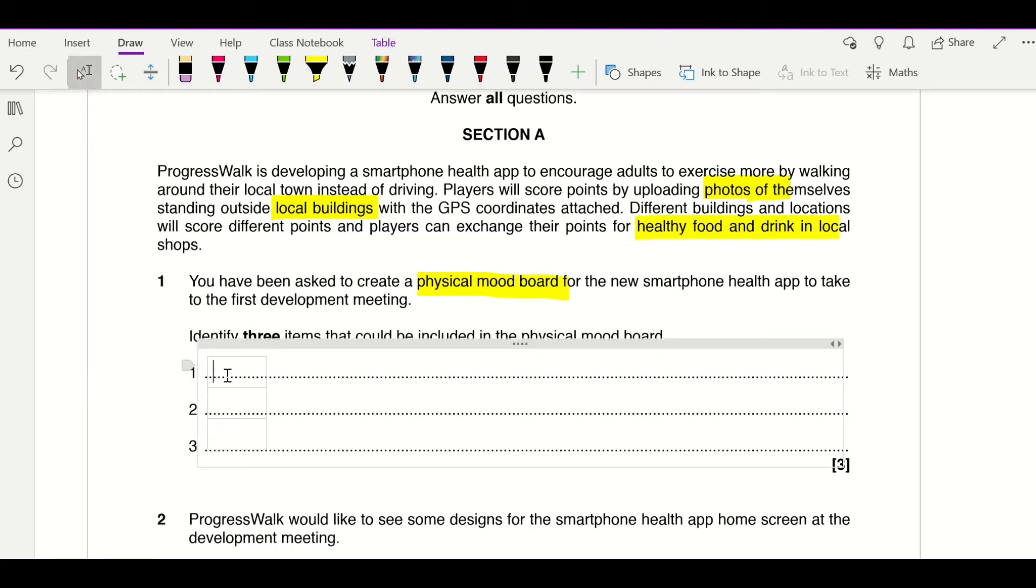So if we think about the photos, we can have a photo, so that will give you a mark. But we could then have multiple photos, so we could differentiate it. You could say photo of buildings - that's one mark. You can have a second mark for photos if it's different, so this time you can have a photo of healthy food and drink.